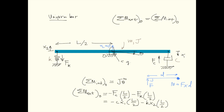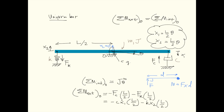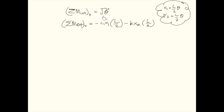Notice that we do not have a uniform coordinate here — we have theta, x1, and x2. To represent the equation of motion with a single coordinate, we must choose one as the generalized coordinate. We choose the rotational displacement theta. Assuming small angles, the geometric relations are x1 equals L over 2 multiplied by theta, and x2 equals L over 2 multiplied by theta.